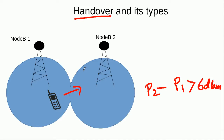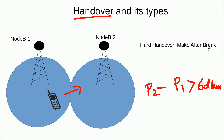There can be two types of handover. The first is the hard handover. In the hard handover, when there is a handover from one Node B to another Node B, first this mobile would break its connection with Node B number 1, and then it would make its connection with Node B number 2. So it is a make-after-break, also known as hard handover.